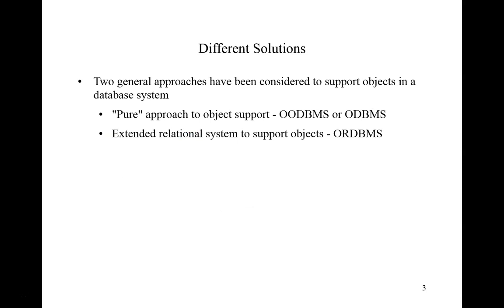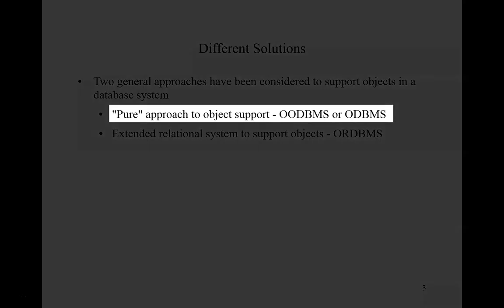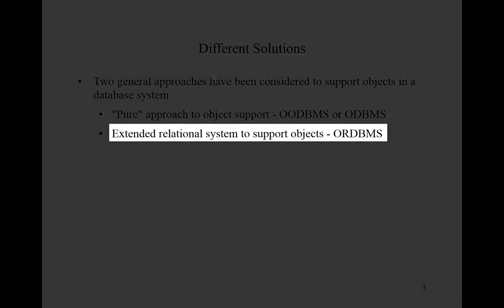Historically, there have been two general approaches considered to support objects in a database system. One is a pure approach: an object-oriented database management system, sometimes called an object database management system. The other is a hybrid approach — extending relational systems, which could already store traditional business data in text and numbers, to add new data types and hence support objects. This is what we're focusing on: object-relational database management systems.